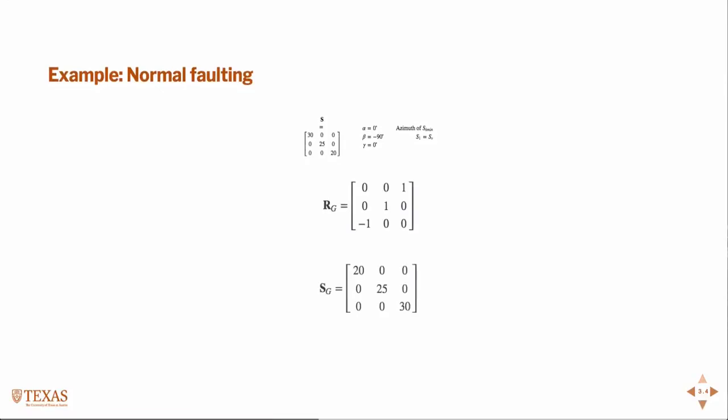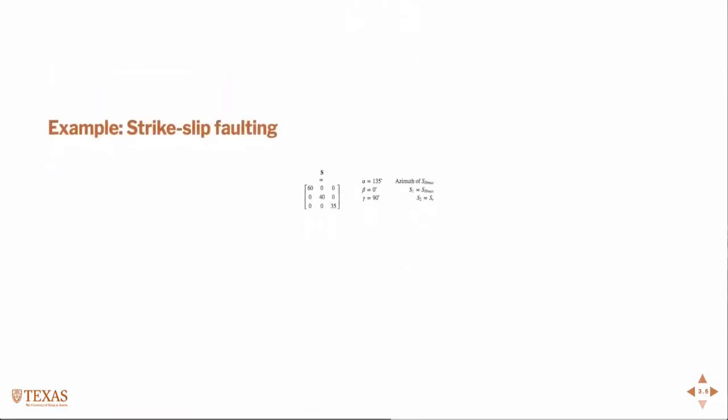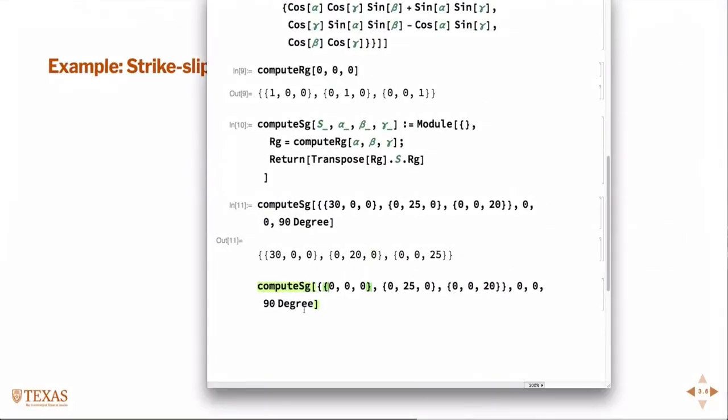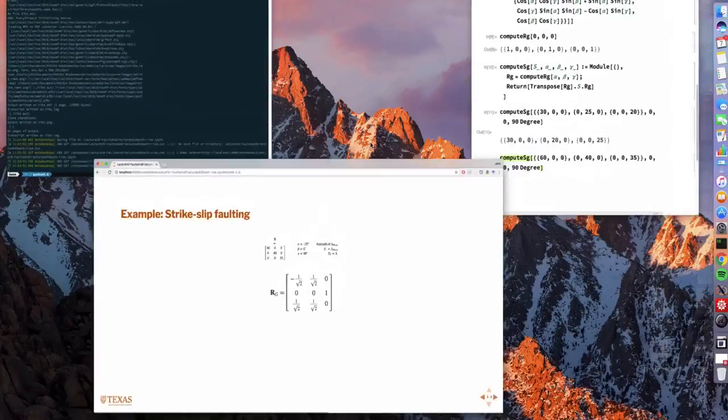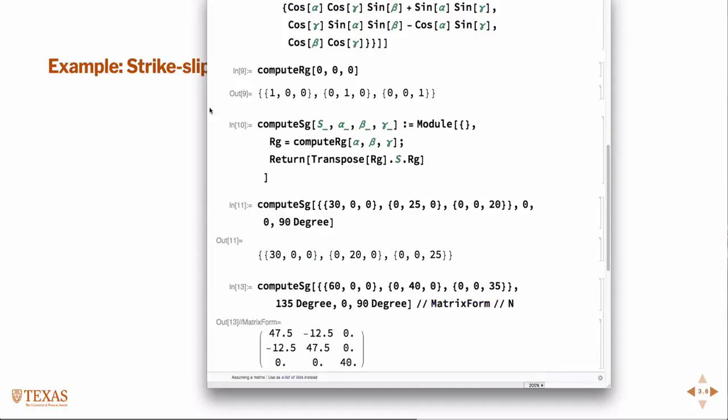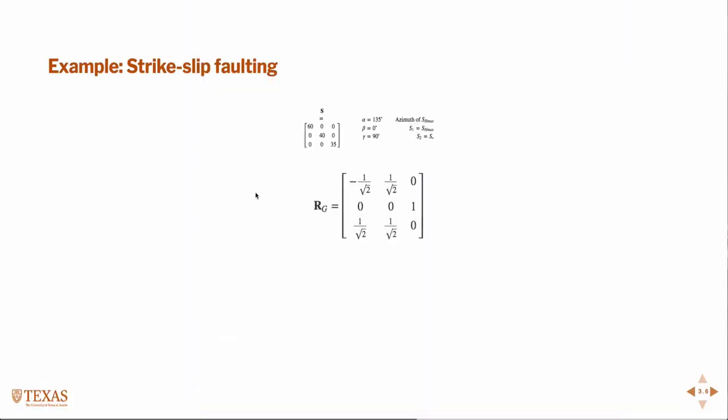So again, just for completeness, and to convince you guys that my code is correct, let's look at this case of strike slip faulting, 60, 40, 35. And the angles are 135, 0, 90. And there's our SG, and there's the answer.